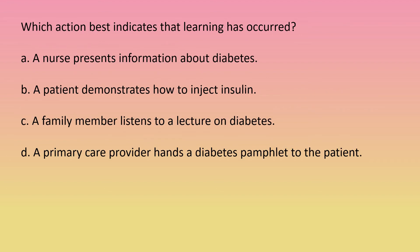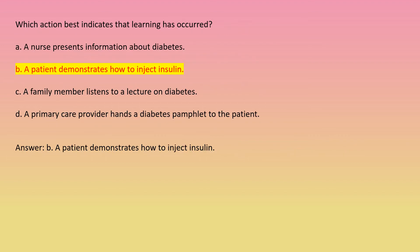Which action best indicates that learning has occurred? A: a nurse presents information about diabetes. B: a patient demonstrates how to inject insulin. C: a family member listens to a lecture on diabetes. D: a primary care provider hands a diabetes pamphlet to the patient. Answer: B, a patient demonstrates how to inject insulin.